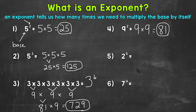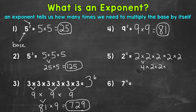Let's move on to number 5, where we have 2 to the fifth power. So this is 2 times 2 times 2 times 2 times 2. Let's start breaking this down: 2 times 2 is 4. Bring down the remaining 2's — 4 times 2 is 8, then 8 times 2 is 16, and then 16 times 2 gives us a final answer of 32.